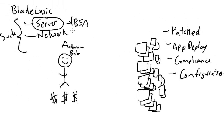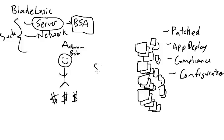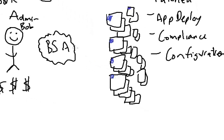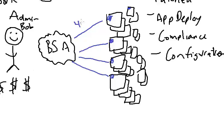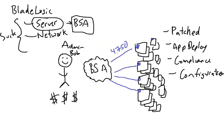In comes BSA to the rescue. They buy BladeLogic and this is our BSA infrastructure. We install and configure BSA — this infrastructure consists of many different components. In order for BSA to work, we have to put a small agent on every machine we want to manage. We can deploy these agents in a variety of ways, and this essentially serves as the connection between the BladeLogic infrastructure and the servers in the environment. This opens up that communication — the default port is 4750, though you can change that to whatever you want.